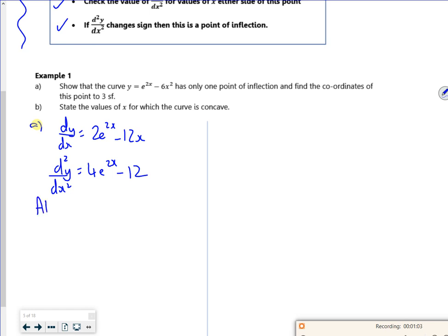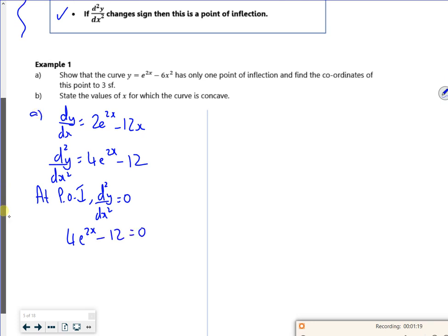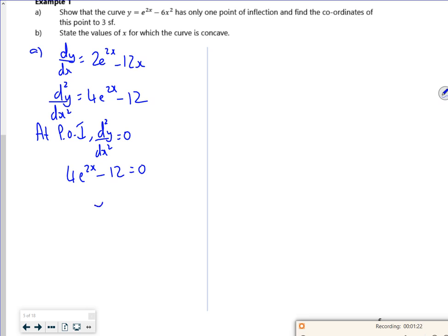And then I know at the point of inflection that d²y/dx² is zero. So my 4e^(2x) minus 12 is zero. If I take the 12 over, divide through by 4, take logs, that gives me that value. Now it says show that it has only one stationary point. I've got one value, one point of inflection.